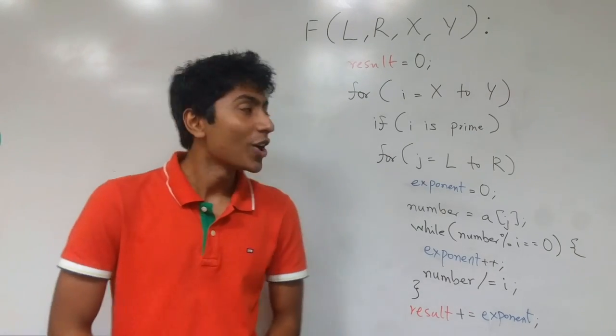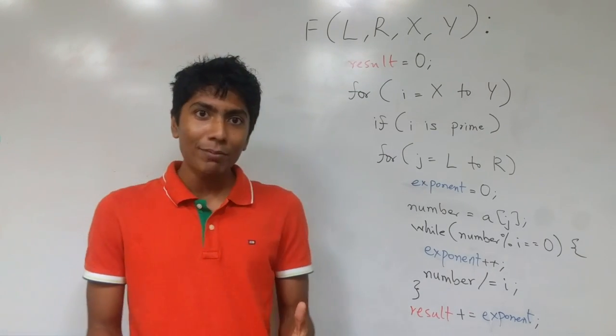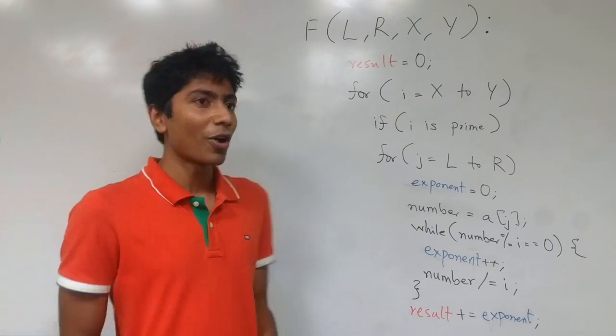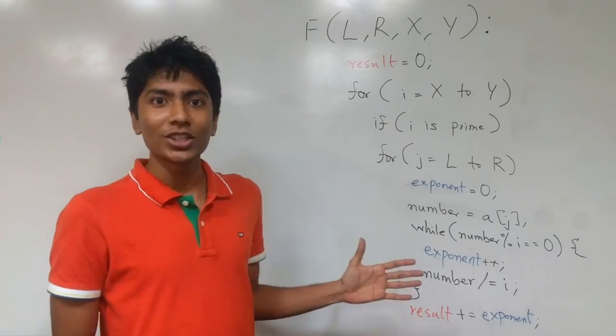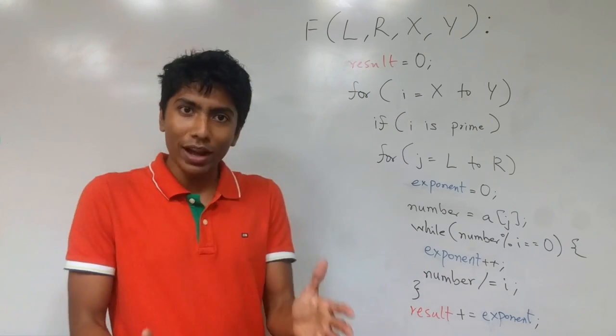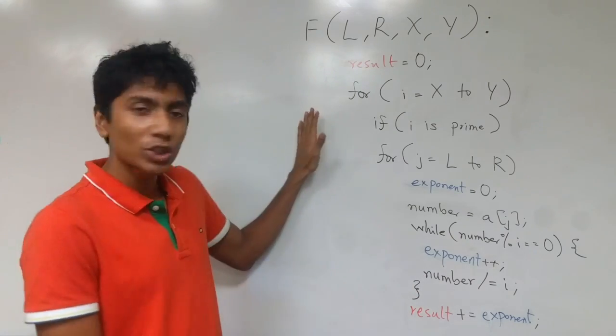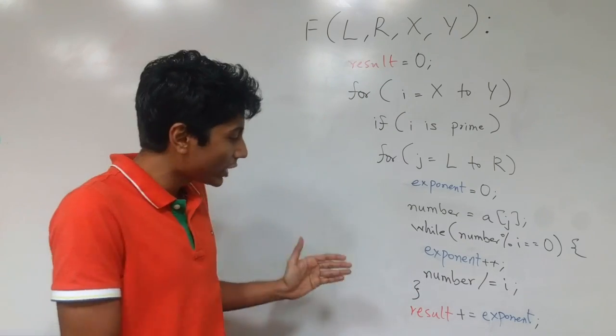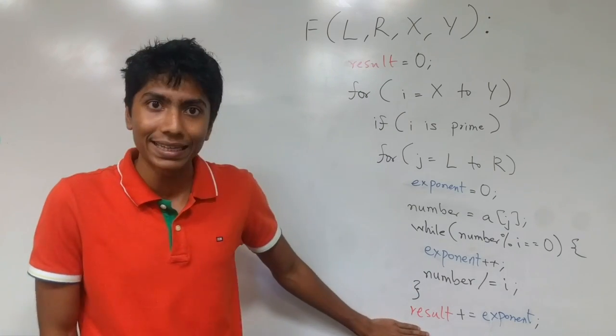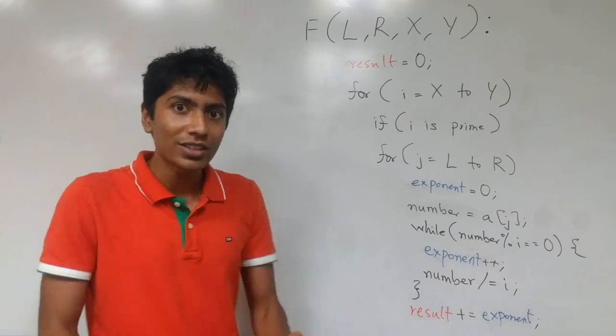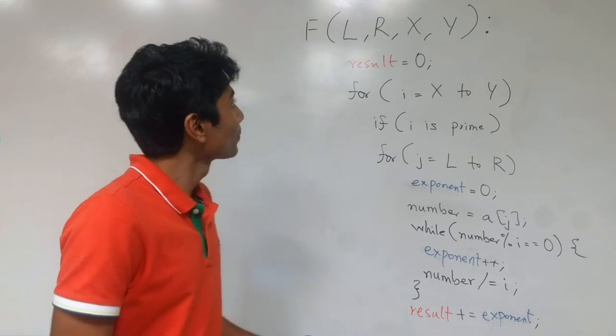Hi guys, this is GKCS. We are talking about the prime queries question from the June challenge. What happens is you have a function given to you and you need to print out the result at the end. Here's how the function goes.